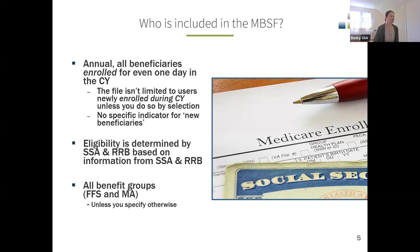Eligibility is determined by the Social Security Administration and the Railroad Retirement Board, so the eligibility information in the MBSF is based on those two sources, making it very reliable information. All benefit groups are included in the file — both fee-for-service and Medicare Advantage enrollees.